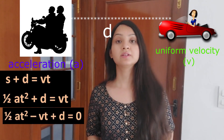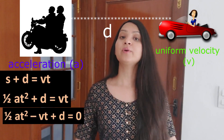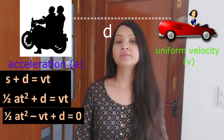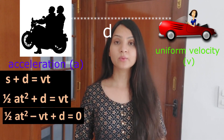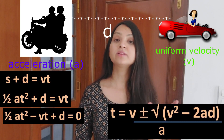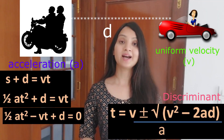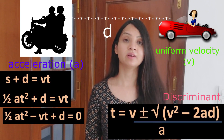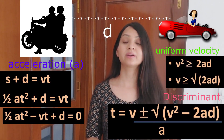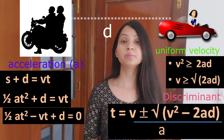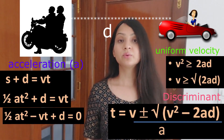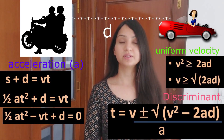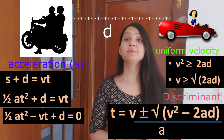Equating these two expressions gives a quadratic equation in time t. Using the quadratic formula, the discriminant is the quantity under the square root. For time to be real and positive — meaning the pickpocket is actually caught — this discriminant must be greater than or equal to zero. Setting that condition and simplifying gives us the answer: option B is the correct choice.